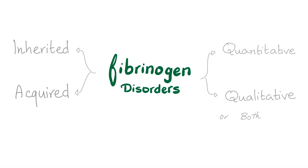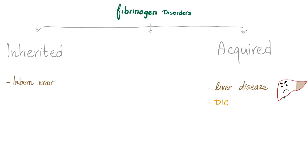This was physiology — now it's time for pathology. Fibrinogen disorders can be quantitative or qualitative or both, and also inherited or acquired. Acquired causes include liver disease and DIC. Why liver disease? Because the liver is the source of fibrinogen — no liver, no fibrinogen. Why DIC? It's disseminated intravascular coagulation — all clotting factors including fibrinogen get consumed.